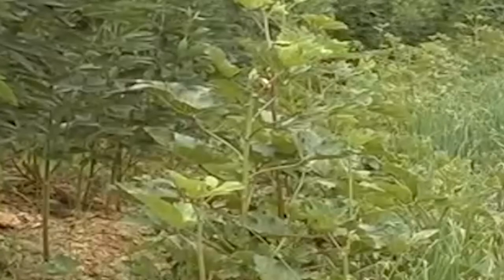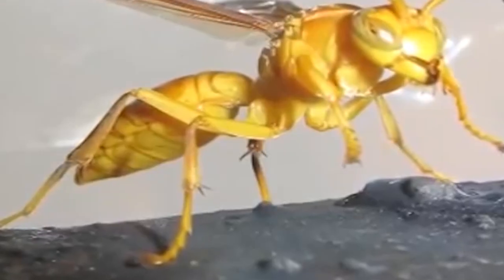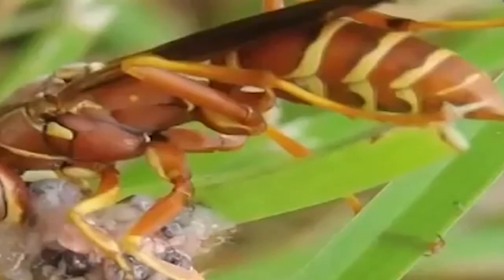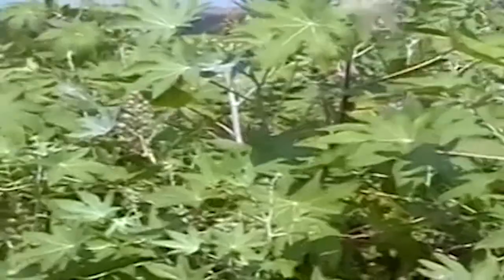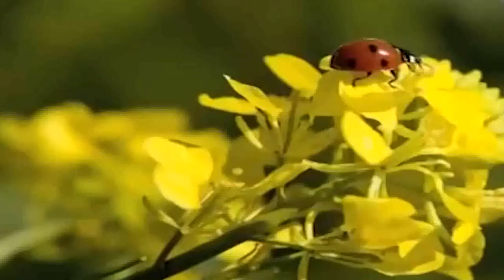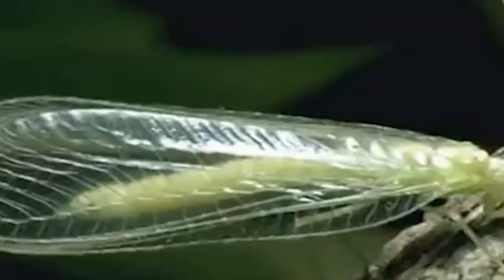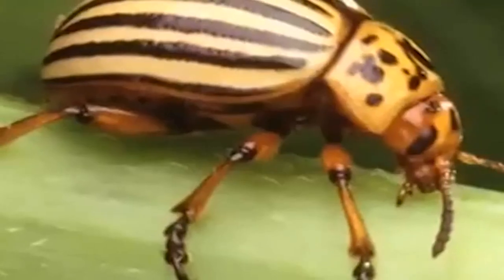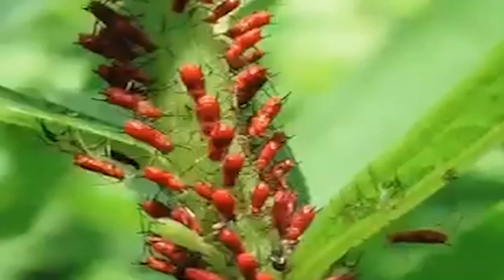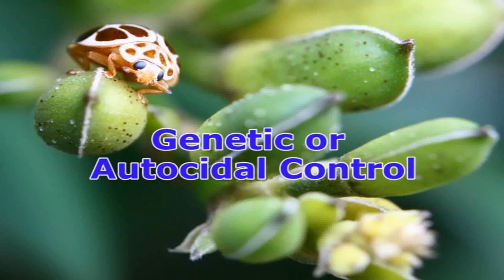Biological control: the successful control of a pest by means of other living organisms — parasites, predators, and pathogens — that are increased and disseminated by man is called biological control. In this method, natural enemies are introduced, increased, and multiplied by artificial means and disseminated by man rather than leaving it to nature, thus differing from natural control. The natural enemies utilized include parasitic and predatory insects, disease-causing viruses, bacteria, fungi and protozoa, parasitic nematodes, and predatory vertebrates.